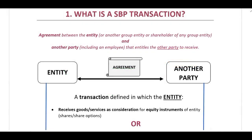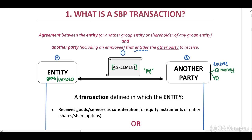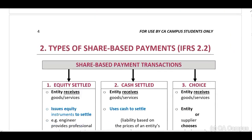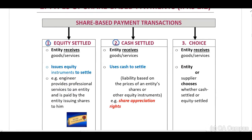What is a share-based payment transaction? It is an agreement between two parties: the entity and another party. The other party provides either goods or services to the entity, and in return — subject to certain conditions being met — the entity will give the other party either money or equity instruments. IFRS 2 classifies share-based payments into three types: equity settled, cash settled, or a choice.